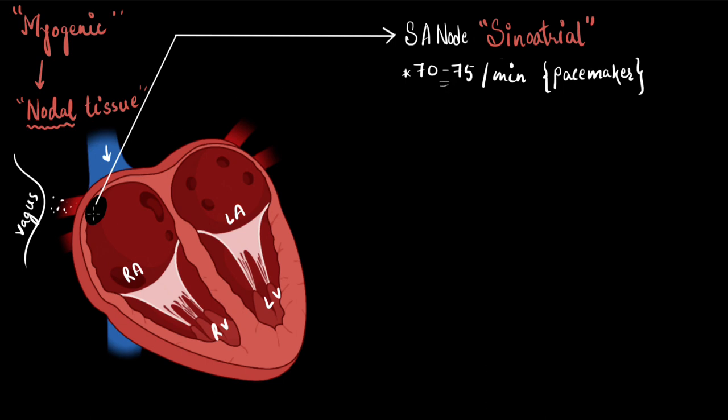Now, talking about the impulse of the SA node, is the impulse from the SA node sufficient to contract the whole heart? Well, it is seen that the impulses are restricted only to the two atria. It cannot move down to the ventricles due to the presence of the fibrous non-conducting tissue between the atria and the ventricles.